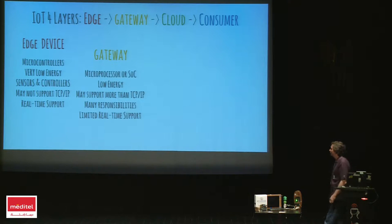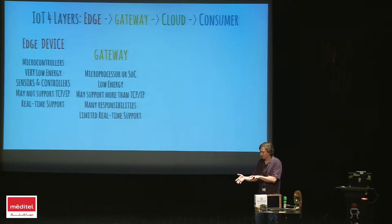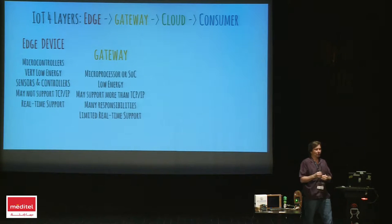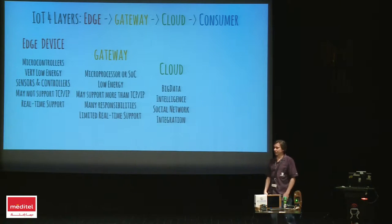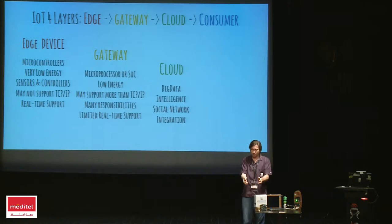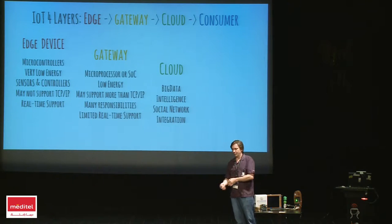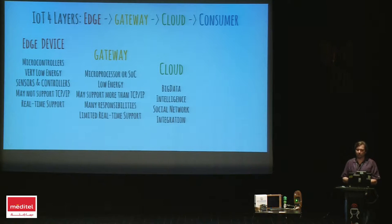The gateway will have many responsibilities different from the edge device. The edge device is limited to controlling some stuff and reading sensors. The gateway provides integration layers, security layer, and persistence layer. In cloud computing — very related to IoT — we have big data: transforming data into information, information into knowledge, and knowledge into intelligence. That's the way we can predict the future using sensors and make things very smart.